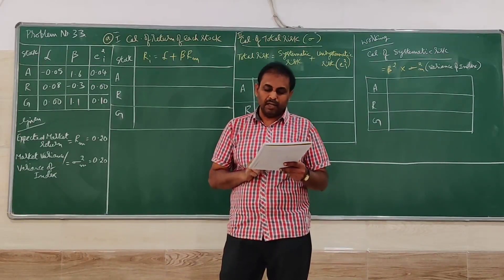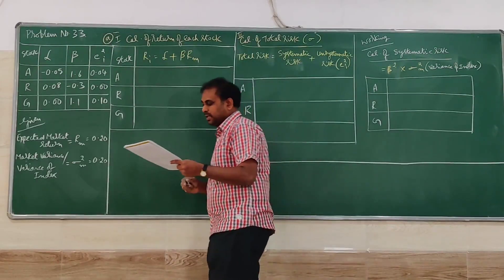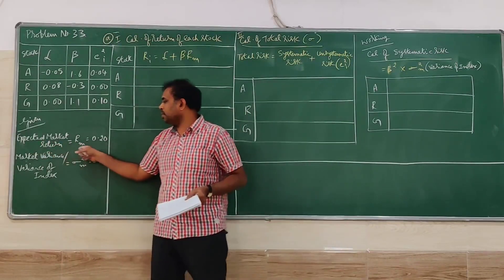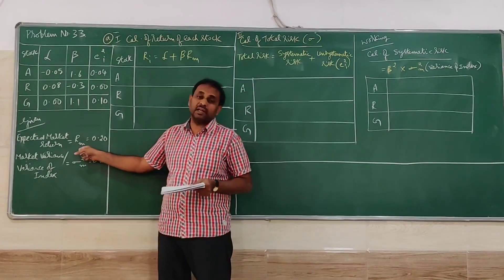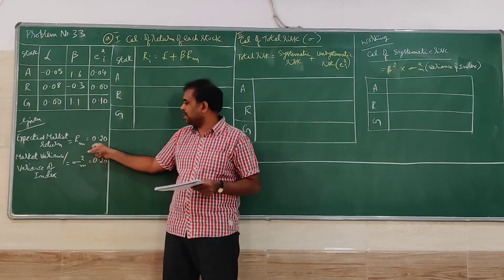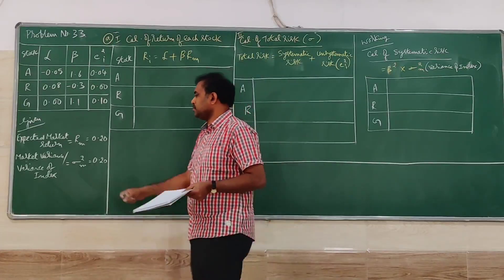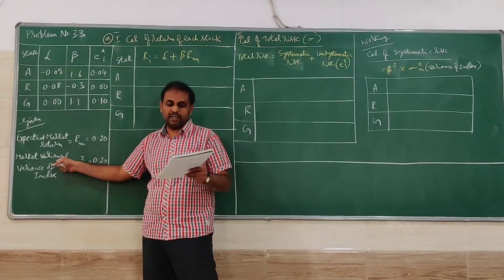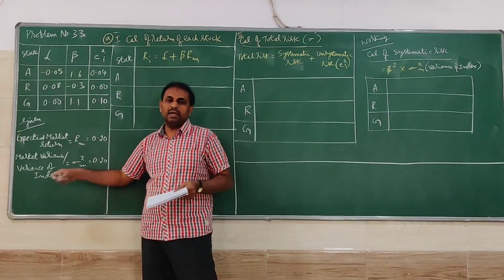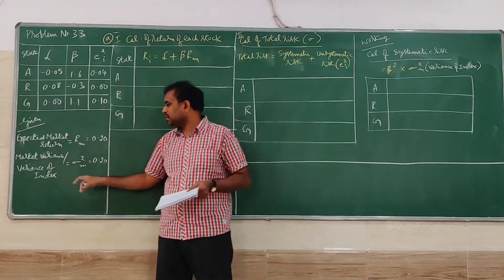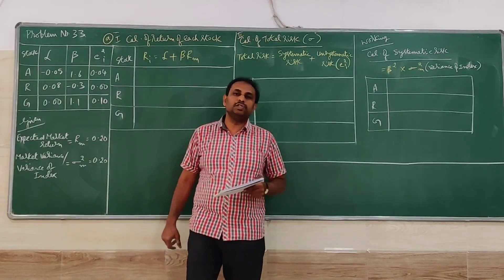Part A: the market index is expected to have a return of 0.20, so the expected market return Rm = 0.20. Continuing, there is a variance of 0.20 connected to the market itself. The variance of the index — like BSC, NSC — is σm² (standard deviation squared of market) = 0.20. We must identify these values before we can proceed.